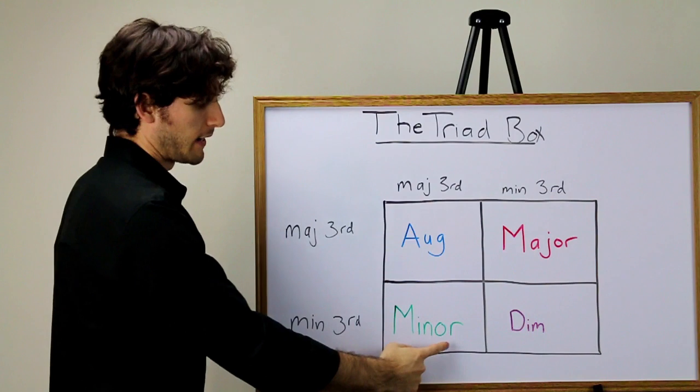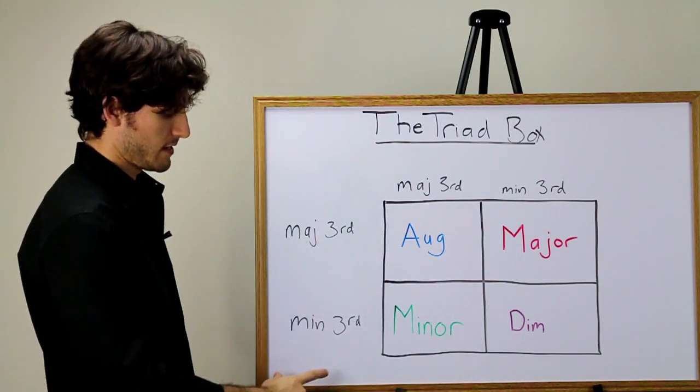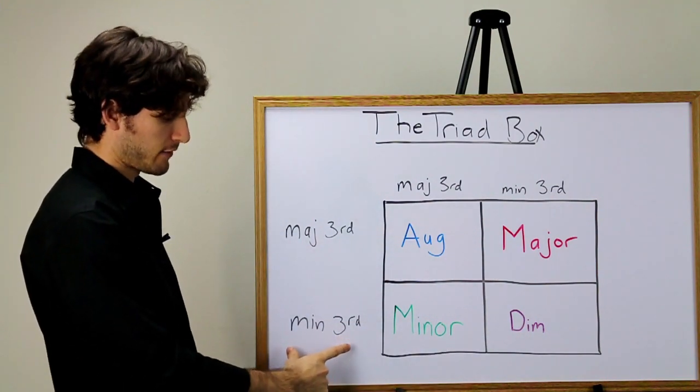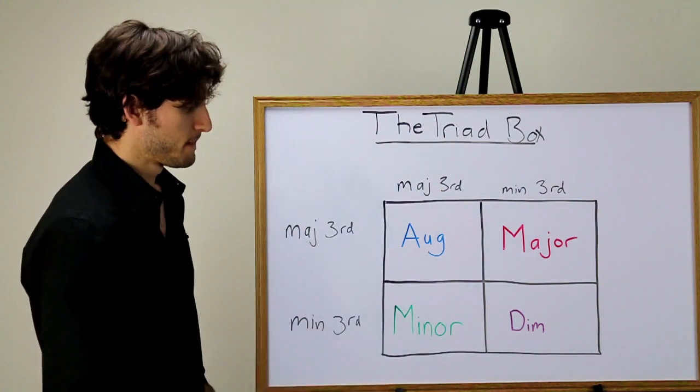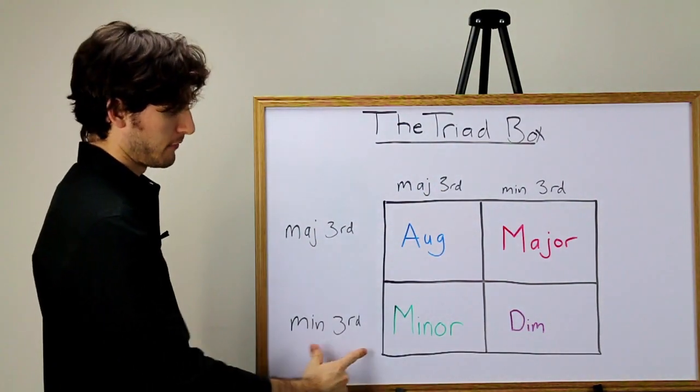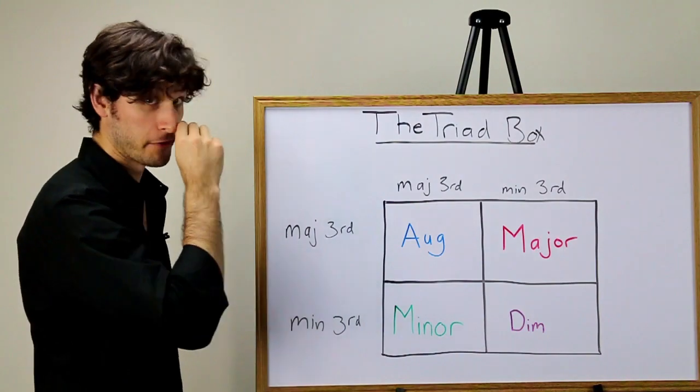To get a minor triad, we stack a minor third plus a major third. And then to get a diminished triad, we stack a minor third plus a minor third.